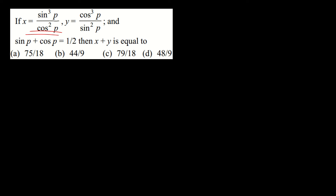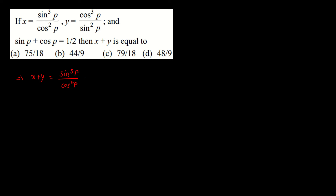The next question gives us x = sin(2p)/cos²(p) and y = cos(2p)/sin²(p), with sinp + cosp = 1/2, and we need to find x + y. We will find x + y by combining the two fractions. After cross-multiplying you get a combined expression.